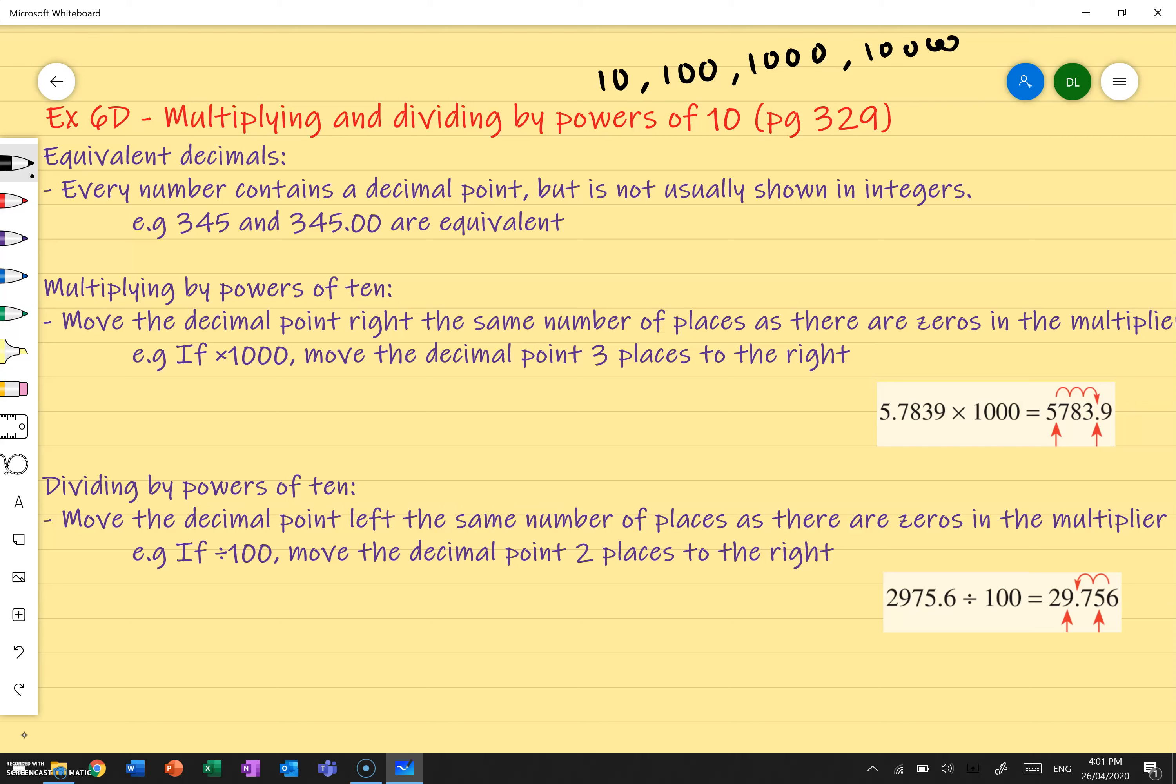So we can actually multiply and divide by these numbers here. But first, before we do that, we have to understand what it means by equivalent decimals. Every number contains a decimal point but it's not usually shown in integers. For example, 43.2 makes sense that there's 43 and also a 0.2. If I said 68, that's also equivalent to 68.0000 for as many zeros as I want to write. As long as it's after the decimal point, I can put as many zeros as I want on the right, and it's going to be the same number.